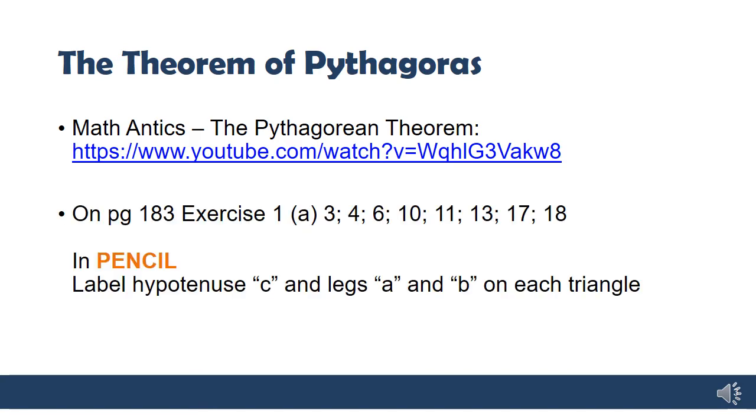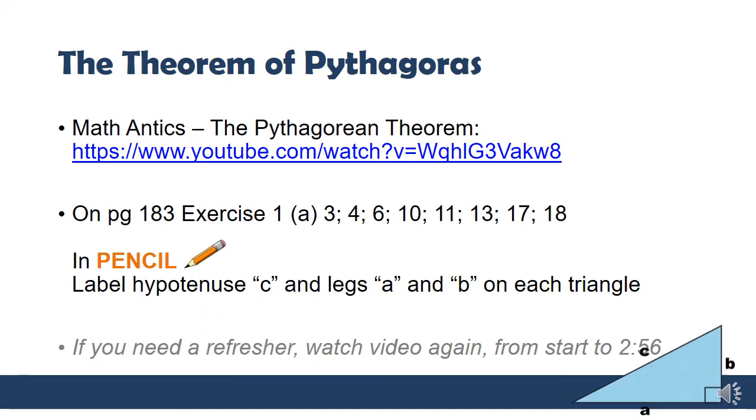What I'd like you to do now is open your textbooks to page 183 and I'm asking you in pencil to label in your textbook on the diagrams themselves. I want you to label the hypotenuse C of each triangle and the two legs A and B. It doesn't matter which one is A and which one is B as long as they are the two shorter sides.